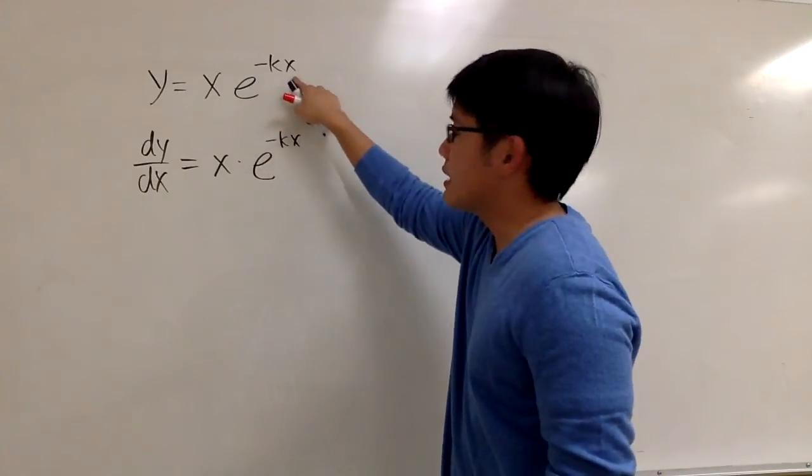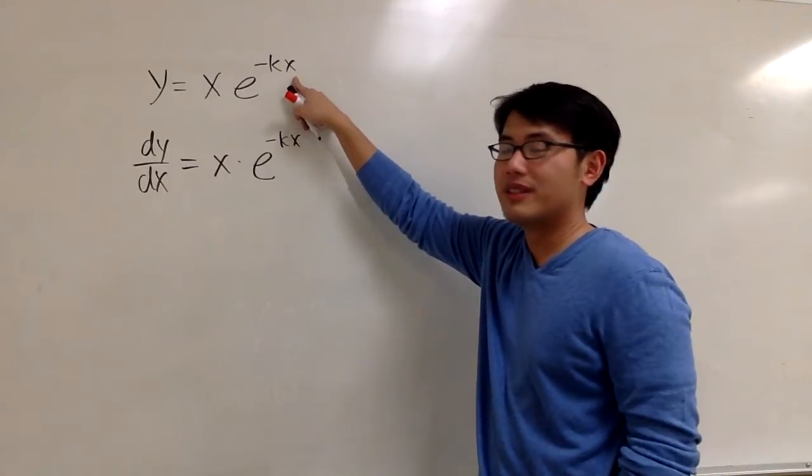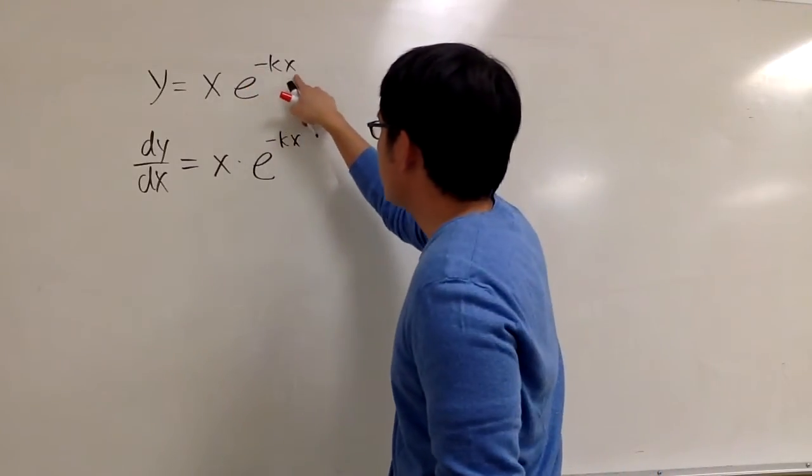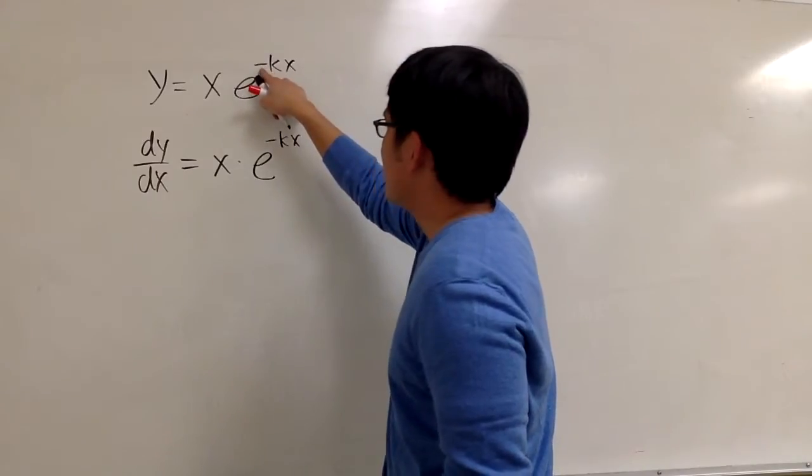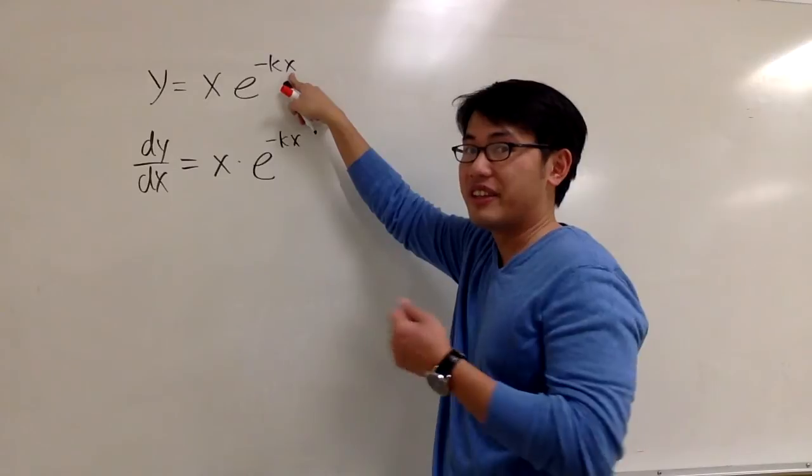But then, you have to look into the exponent, and then because of the chain rule, you have to take the derivative of this. This is just like negative 6x, and the derivative of that is just going to be negative 6.